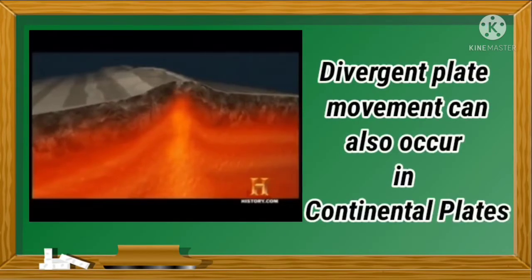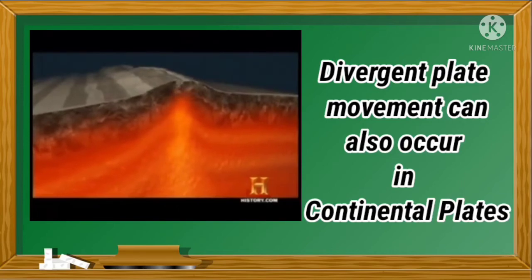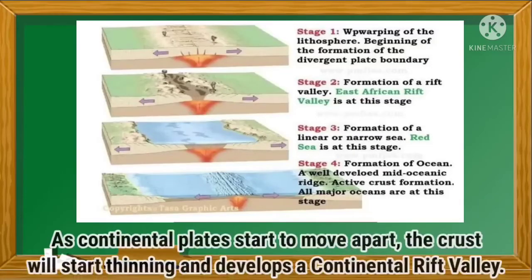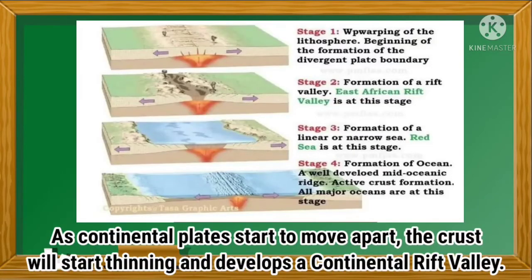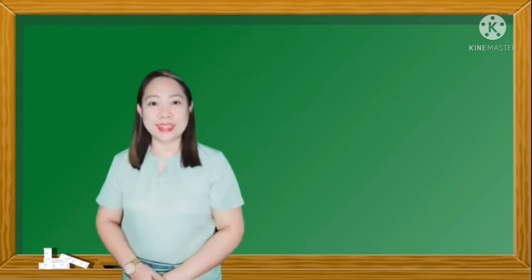Divergent plate movement can also occur in continental plates. As continental plates start to move apart, the crust will start thinning and develops a continental rift valley. The continental rift valley will develop into a narrow sea and then into a wide ocean.